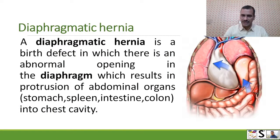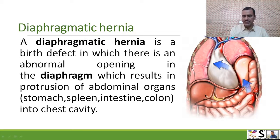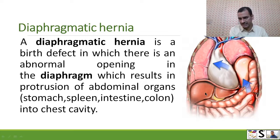What is diaphragmatic hernia? A diaphragmatic hernia is a birth defect in which there is an abnormal opening in the diaphragm. The diaphragm is a muscular wall between the chest cavity and abdominal cavity. If there is some problem or weakening in the diaphragm, an opening is created and the abdominal organs reach up into the chest cavity.